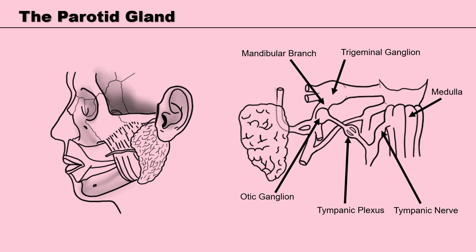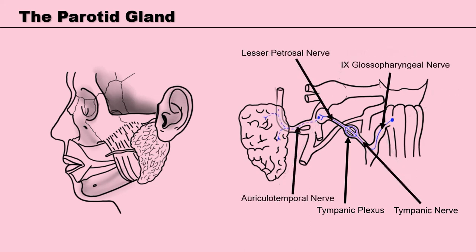The parotid gland receives its secretomotor innervation from the ninth cranial nerve, the glossopharyngeal nerve. This slide shows a simplified version of the secretomotor pathway. The glossopharyngeal arises from the brain and leaves the cranial cavity through the jugular foramen. Just after doing so, it gives off a branch called the tympanic nerve, which goes back into the skull.